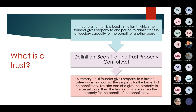In general terms, a trust is a legal institution involving three parties. The founder is the person who starts or creates the trust. The founder gives property to a trustee, who must administer it. The trustee has a fiduciary capacity. The third party is the beneficiary, for whose benefit the property is administered.